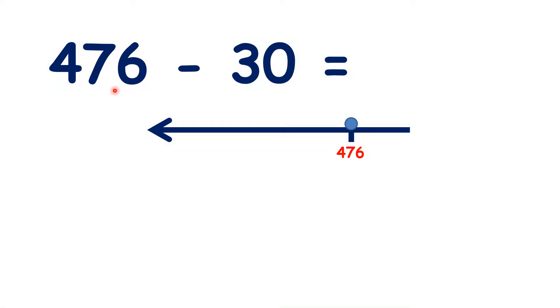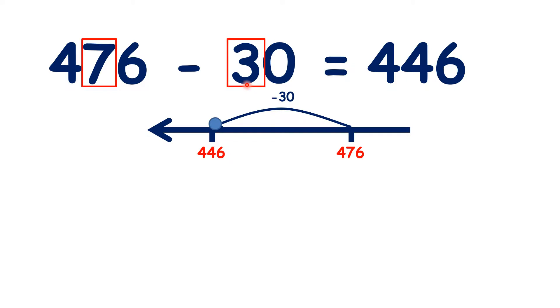So here we have 476 minus 30. We can subtract 30 to get our answer of 446, and we don't really even need a number line for this question, because we start with 7 tens, so if we take away 3 tens, that leaves us with 4 tens in our answer.